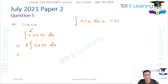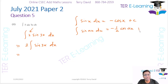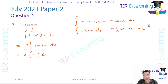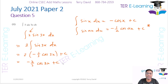Now the rules we need to know: the integral of sin(x) is −cos(x) + c, and the integral of sin(kx) dx is −(1/k)cos(kx) + c. Using that rule, this becomes 2 × (−1/3)cos(3x) + c, which simplifies to −(2/3)cos(3x) + c. That's my answer for that part.